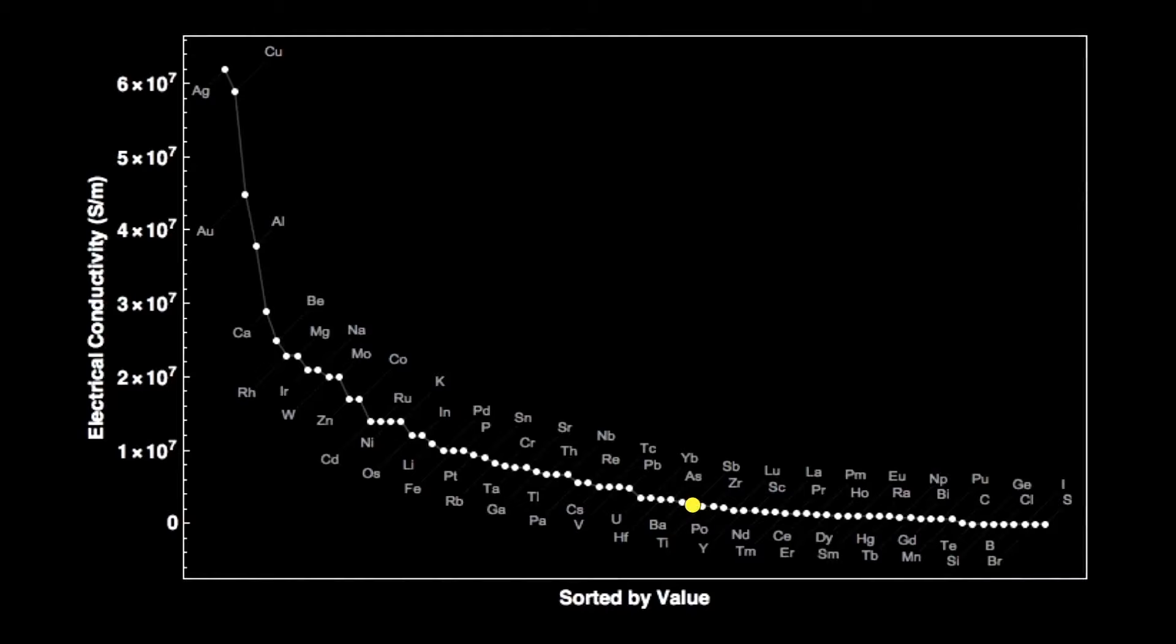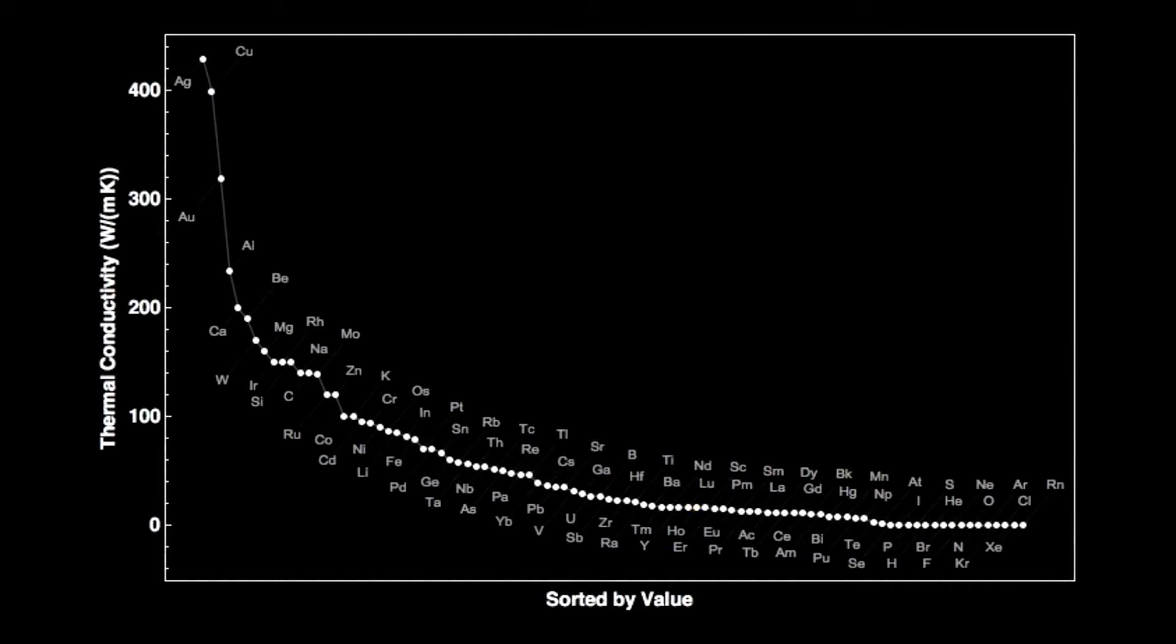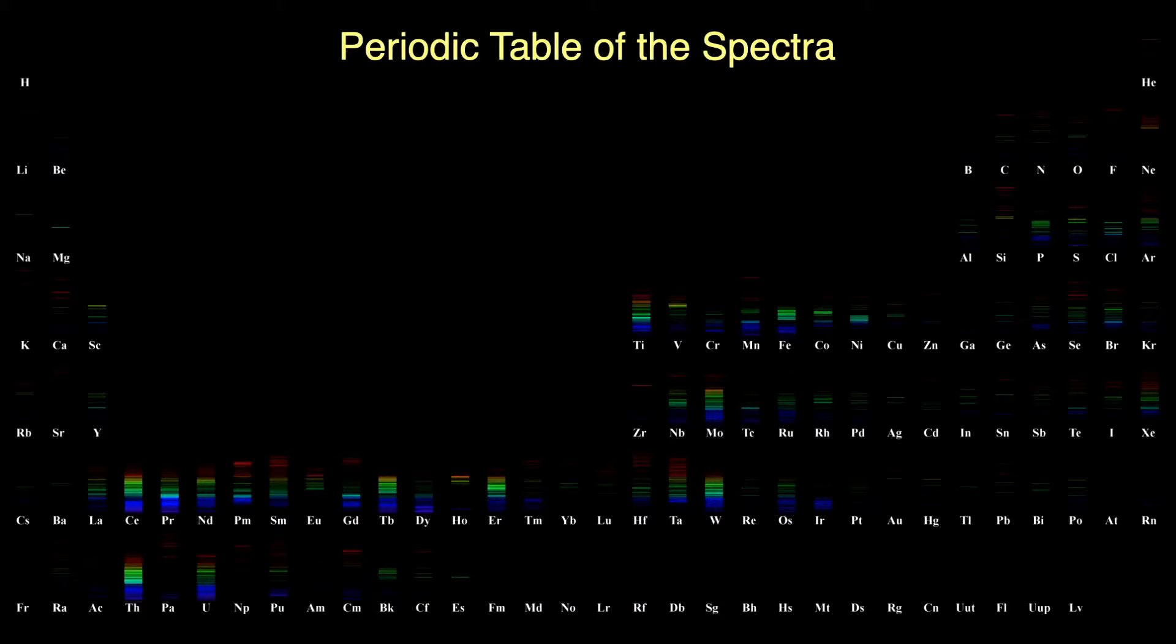Antimony is the 46th best conductor of electricity, meaning it's a kind of a poor conductor, actually. It's the 47th best conductor of heat. Again, pretty bad. Conductivity of heat usually follows conductivity of electricity because they both have to do with how hard it is to move around the outer electrons.